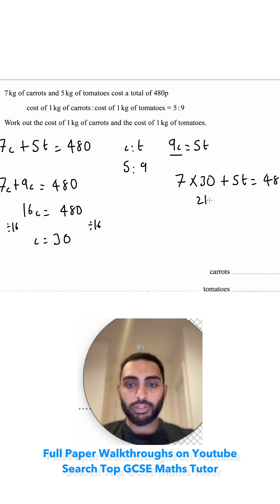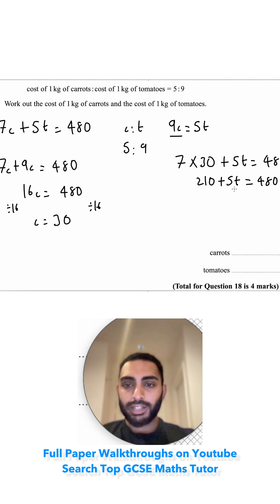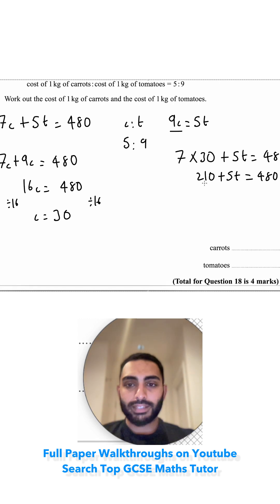7 times 3 is 21, so 210 plus 5t is equal to 480. t is being multiplied by 5, now we're adding 210, so take away 210 from both sides.